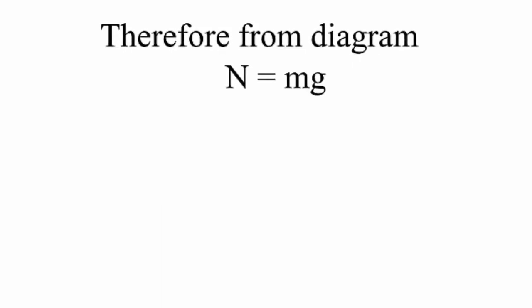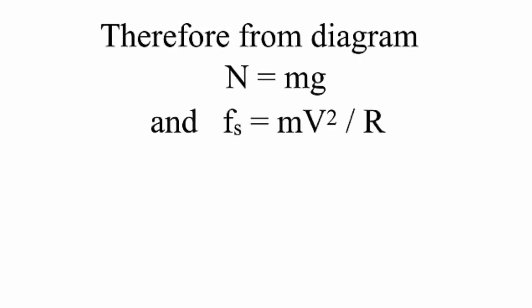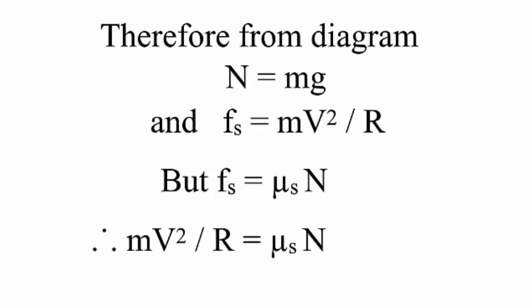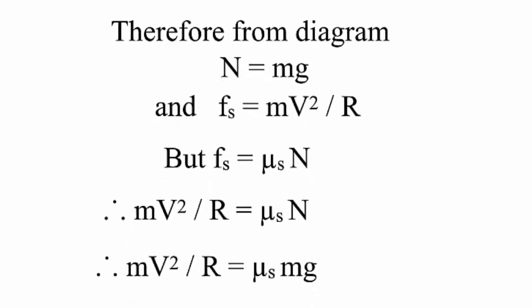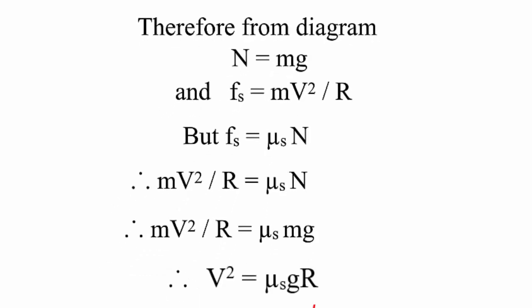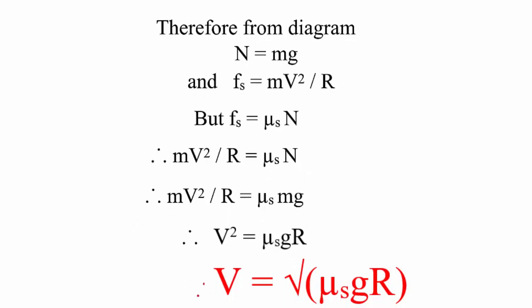Therefore, from the diagram, normal reaction is equal to the weight of the vehicle. More importantly, the required centripetal force is provided by the force due to friction. So, force of friction equals mv² upon R. As we know from 11th, frictional force is μ into N, where μ is the coefficient of friction between tires and road surface. Therefore, mv²/R = μN. Substituting N = mg, it becomes mv²/R = μmg. Cancelling m on both sides, v² = μgR, and therefore v = √(μgR).